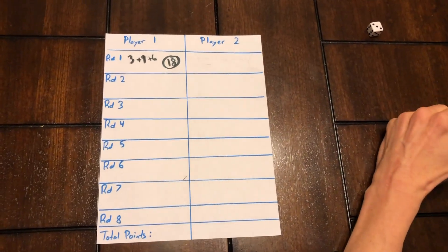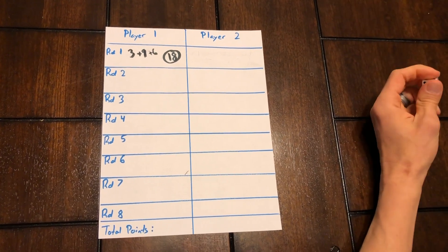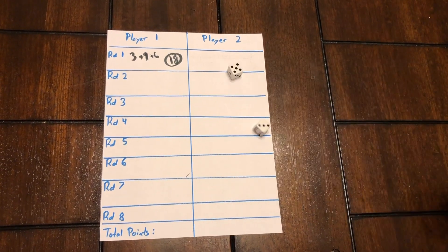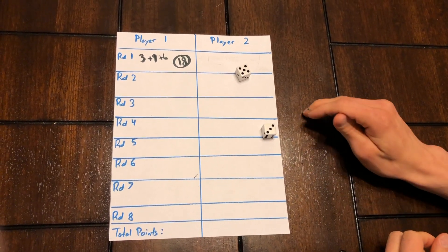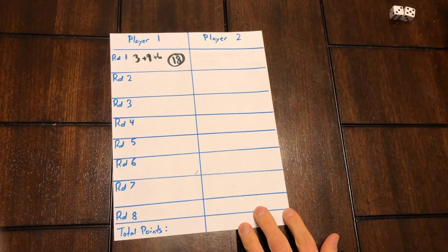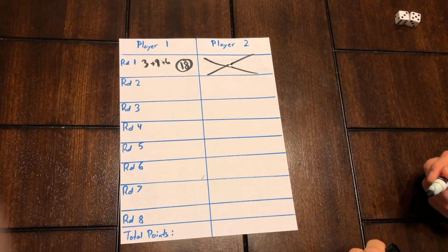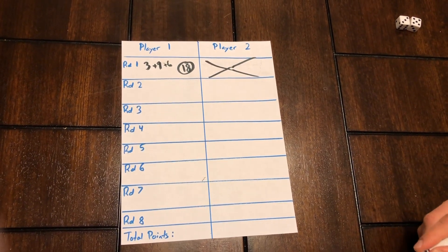I'm going to write down the sum and circle it. Then it moves on to player two. I'm also going to demonstrate here. Player two starts off the same way. I'll go ahead and roll. You can see here player two got a three and a five, which is a total of eight. So they unfortunately get zero points for round one. Now we'll move on to round two where I will roll again and add up my sum.